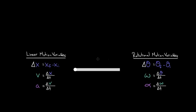Because these definitions are exactly the same — except the linear motion variable is replaced with its angular counterpart — all the equations, results, and principles we found and derived for the linear motion variables will also hold true for the rotational motion variables, as long as you replace the linear motion variable in that equation with its rotational motion variable counterpart.